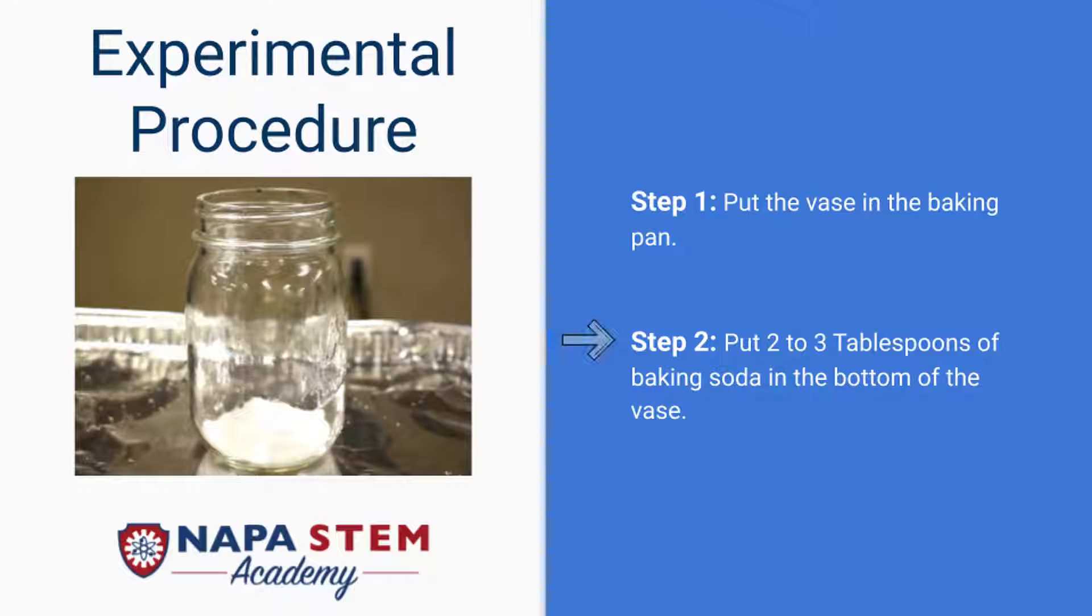Step two, put four tablespoons of baking soda in the bottom of the vase.